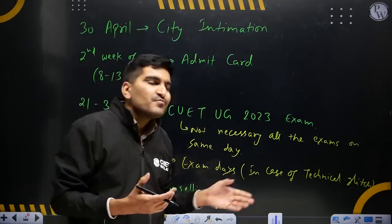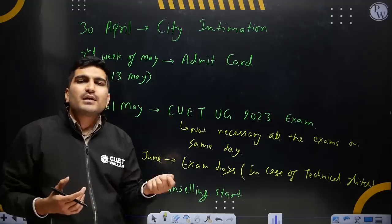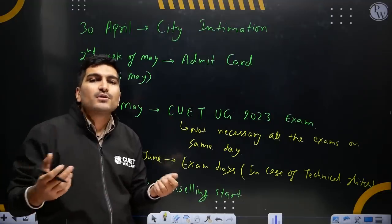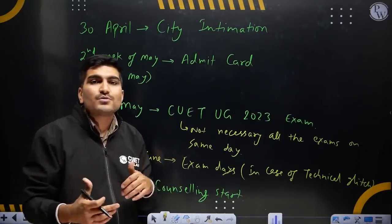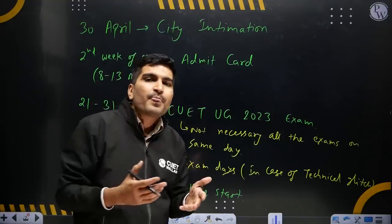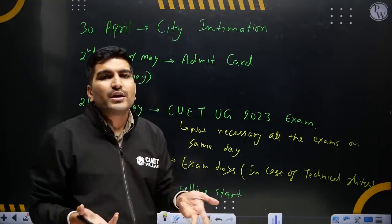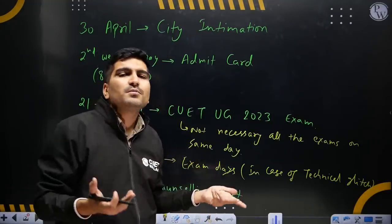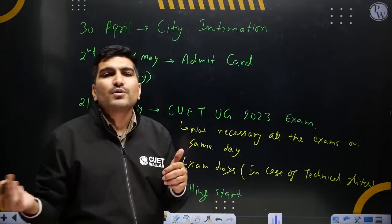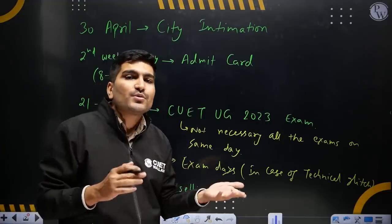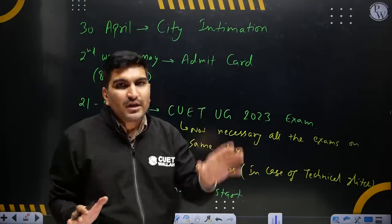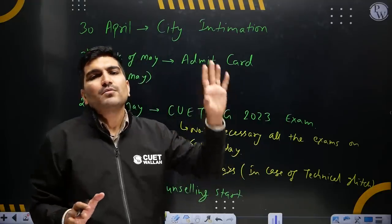Obviously you cannot take history and geography at the same time, so you will have to do one exam, then another. There will be different slots — you will have two or three slots, such as morning, evening, or afternoon. A paper on one day will have a set time in the schedule, which will tell you which papers fall on the same day.